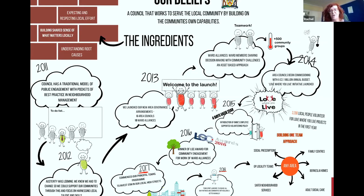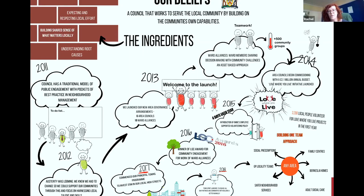Moving up to 2013, we launched our new area governance arrangement. We have six area councils and 19 ward alliances. We looked at who would be at the ward alliances — ward members and community members — and we took an asset-based approach. We set up the area councils and began commissioning with a £2.1 million devolved budget, and we launched the Love Where You Live initiative around volunteering in Barnsley.